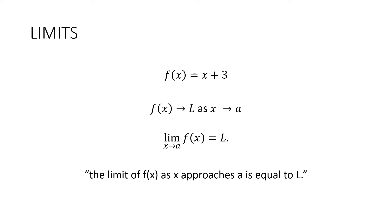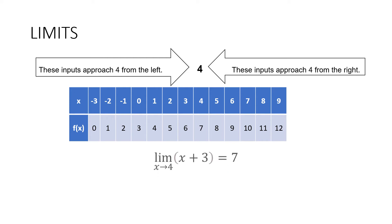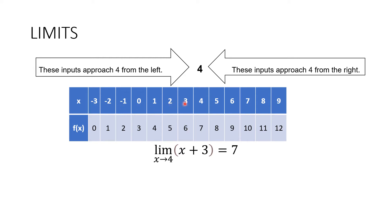We are not really after the value of the function if x is equal to a. Using the same function x plus 3, we are going to look for the limit of x plus 3 as x approaches positive 4. Let's say we are going to put values for x coming from the left side. These are the inputs approaching 4: negative 3, negative 2, negative 1, 0, 1, 2, 3.